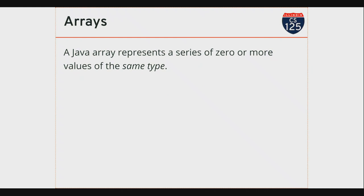An array in Java represents a series of zero or more values of the same type — that's our limitation. We will talk later in the semester about the data we can represent when we start mixing different types of information together. A little bit of characters, a few integers, and now I can represent information about a person — they might have a name, an age, a weight. But for now, we're talking about a series of the same type.